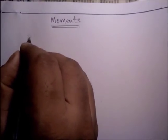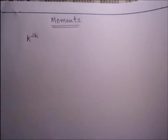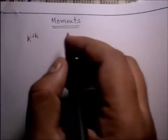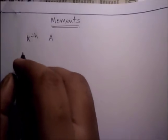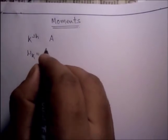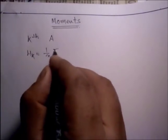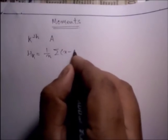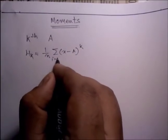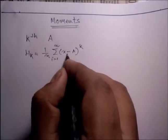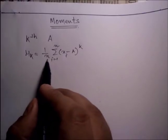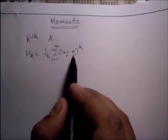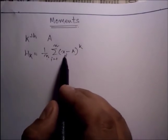For ungrouped data, the kth moment about an arbitrary constant 'a' is as follows: mu_k = (1/n) * summation of (x_i minus a) to the power k, where i equals 1 to n, n is the number of data, a is a constant, and x is the value.